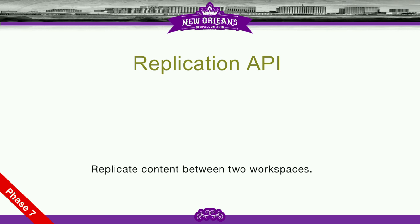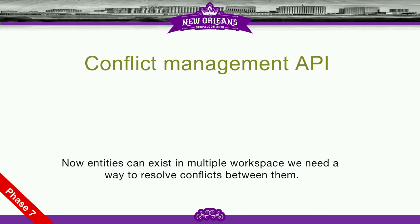Now that we have a way to replicate content between workspaces, we can start looking at conflicts. Currently in Contrib we just pick one of the conflicting revisions, but we'd be looking at adding a full conflict management API into core. There are still many implementation details to work out, but I'd like it to be a pluggable system — you could pick revision A or B, or have a full three-way merge with a four-pane screen to choose conflicting changes. We can make this a very extendable API.